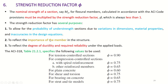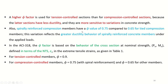Within compression control, one value is 0.75 and the other is 0.65. The 0.75 compared to 0.65 for tied column members reflects the greater ductile behavior of spirally reinforced concrete members under applied loads. In ACI 318, the phi factor is based on the behavior of the cross section at nominal strength, defined in terms of the net tensile strain in the extreme tensile steel as given in Table 1.